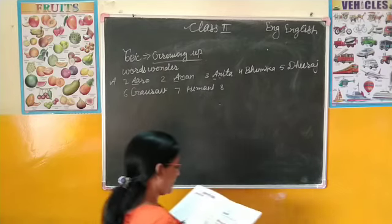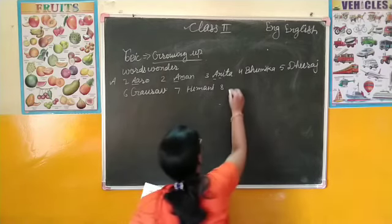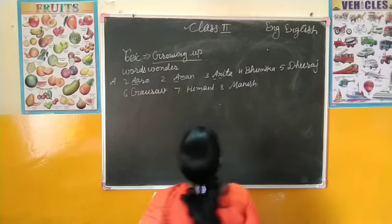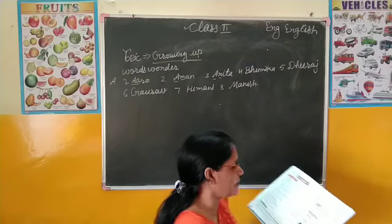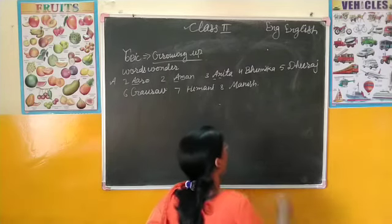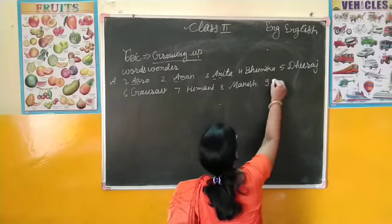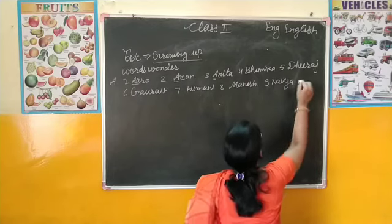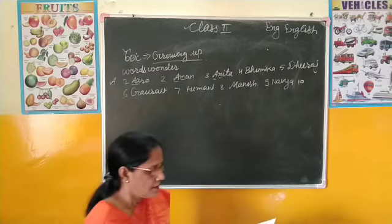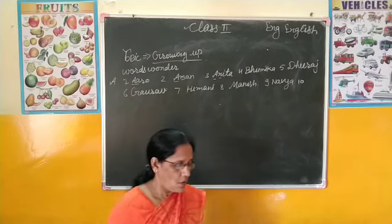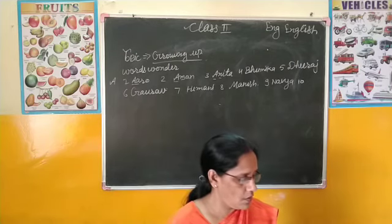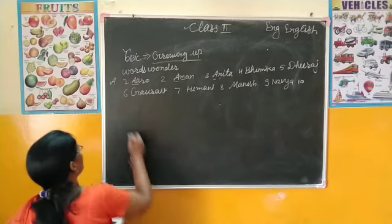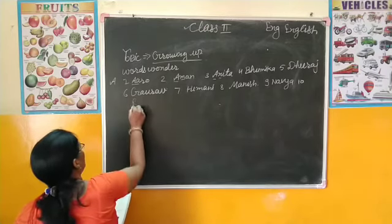Next Number 8 है - इसमें Manish, M-A-N-I-S-H। M के बाद N पे देखेंगे, तो N पे है 9 - Navya। 10 Number देखेंगे - N के बाद O पे कोई नहीं है। उसके बाद आता है P - P पे Priyanka है, 10 Number पे Priyanka।